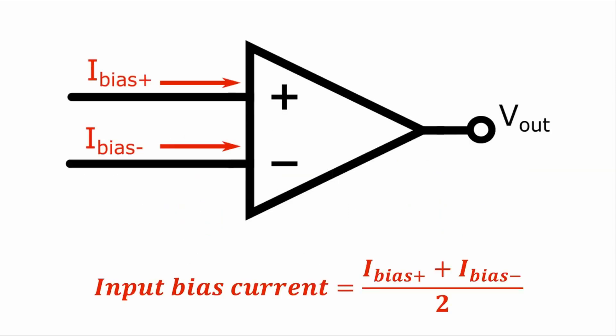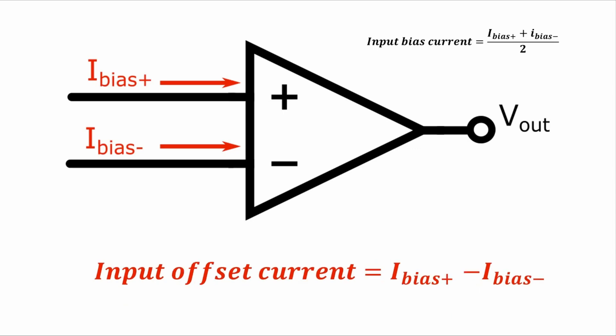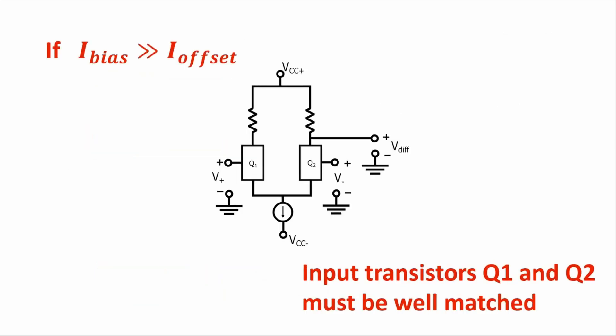The definition of the input bias current is that it is the average of the two currents going into the inverting and non-inverting pins of the op-amp, and a related measurement called the input offset current is equal to the difference between the two currents. This input offset current is really only a meaningful value when Q1 and Q2 and their associated input bias currents are well matched and close in value, in which case the input bias current will be much bigger than the input offset current.